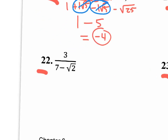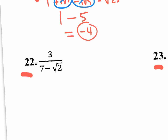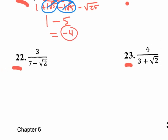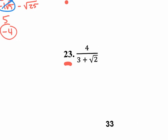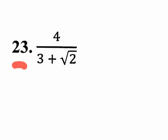Let's jump to number 23. We need to know that you don't want square roots in the denominator, so on 22 and 23 we're going to have to get rid of the square roots in the denominator. If I want to get rid of this radical in the denominator, it's not enough to multiply by the square root of 2. You have to multiply by its conjugate because this really is a binomial, and you need to multiply by the conjugate of that binomial, which would be 3 minus the square root of 2.